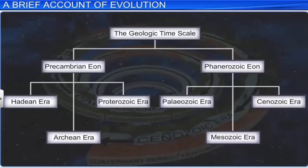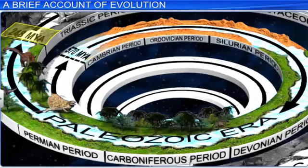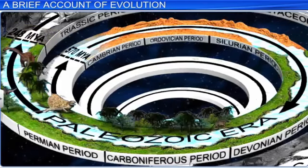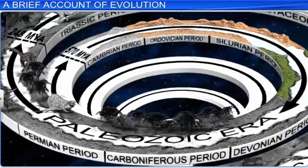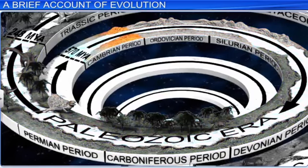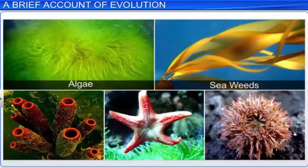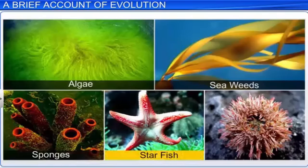The Paleozoic era spans from around 540 or 570 million years ago to about 248 million years ago. It is divided into six periods: the Cambrian, Ordovician, Silurian, Devonian, Carboniferous, and Permian. In the Cambrian period, plant life consisted of primitive algae and seaweeds, while animal life consisted of invertebrates such as sponges, starfish, and sea urchins.